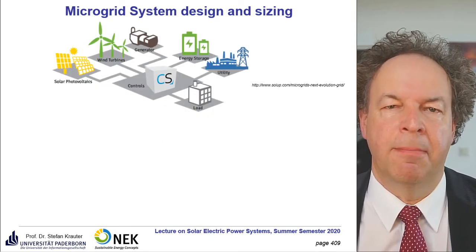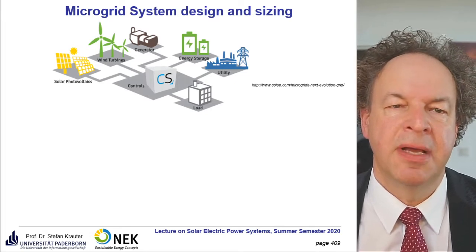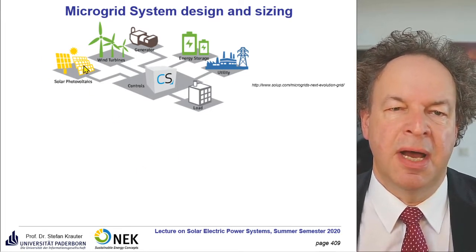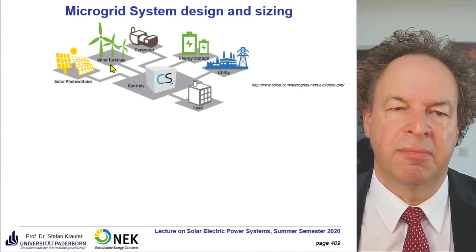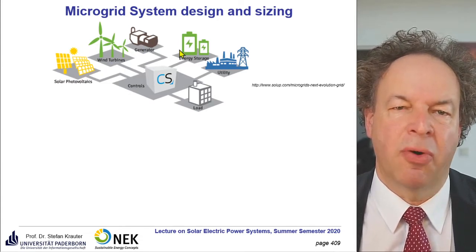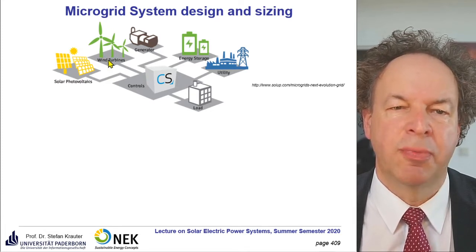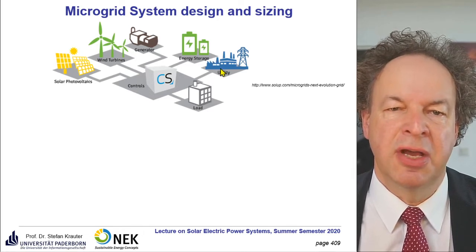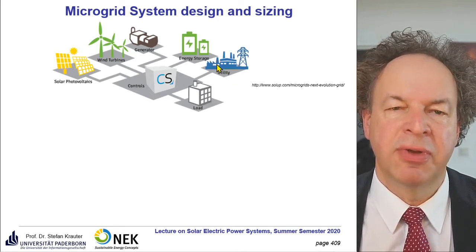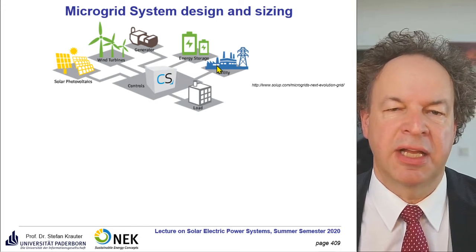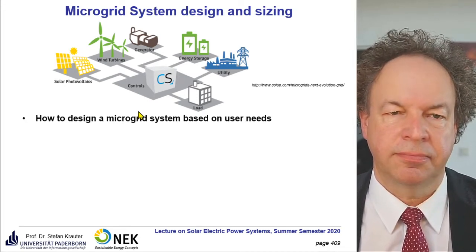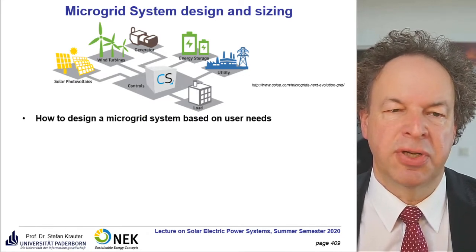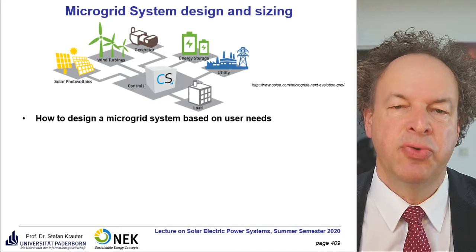This is a typical microgrid system. We have our PV system, and often other resources for backup or energy storage, and sometimes — if the resource is sufficient — wind turbines. We have controls and a load. Sometimes the system is grid-connected, either to get electricity from the grid or to feed electricity into the grid. The first issue is how to design a microgrid system based on user needs.